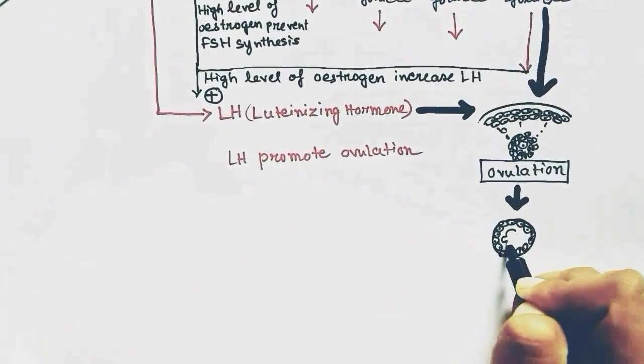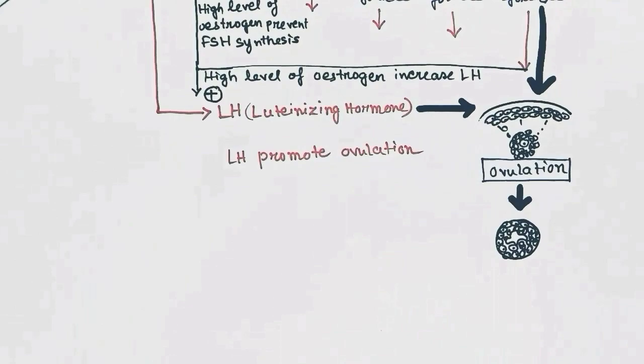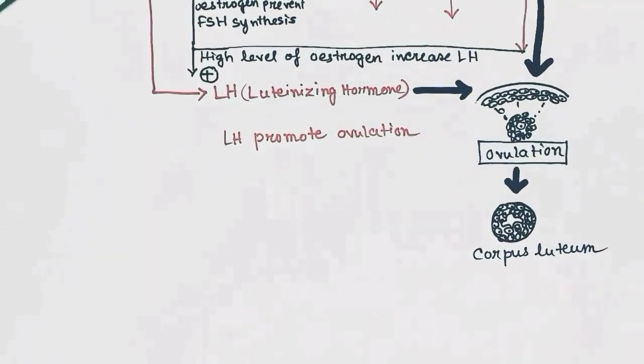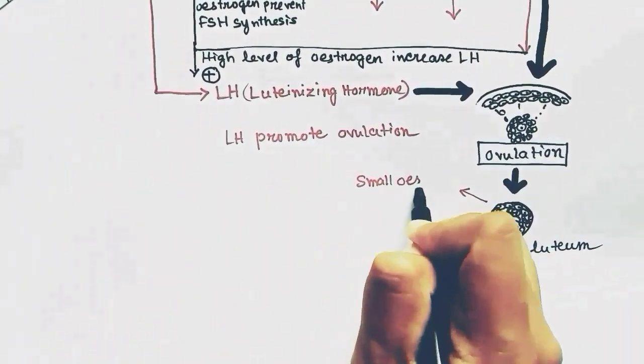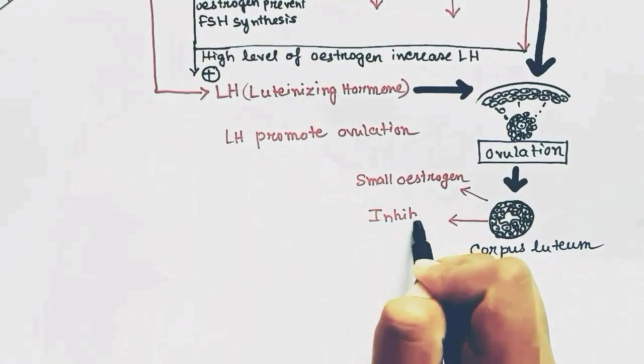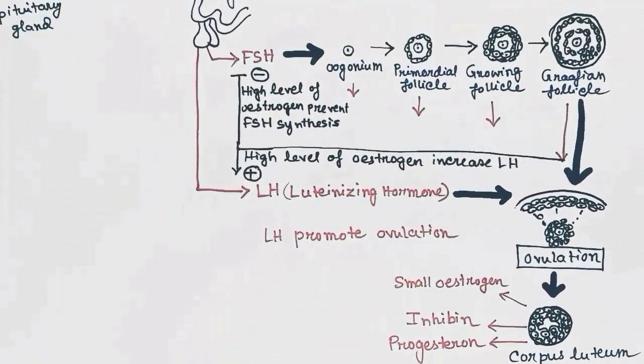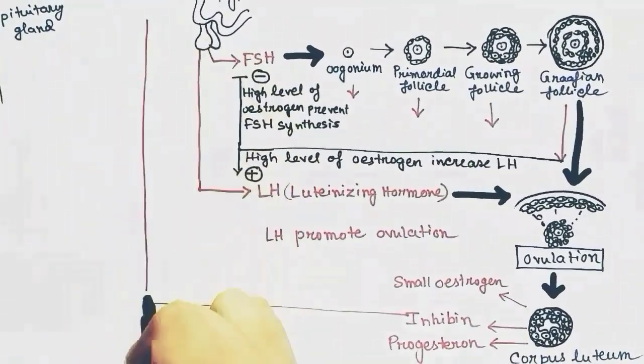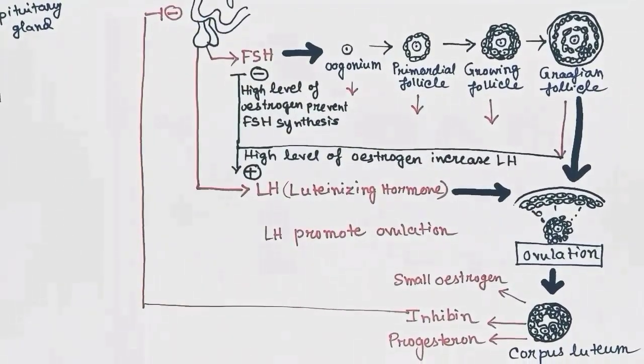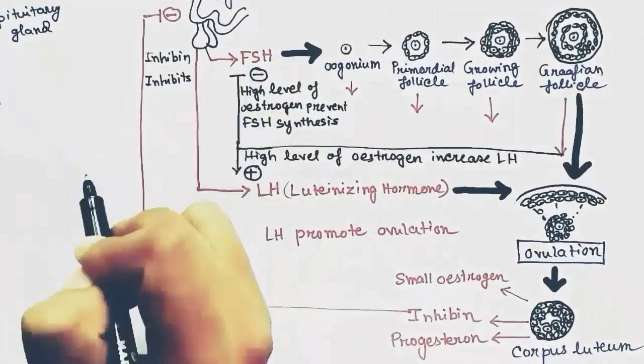The corpus luteum releases three hormones, small amount of estrogen, inhibin, and progesterone. Inhibin has its negative feedback on FSH release. Inhibin inhibits FSH release from pituitary gland, that is anterior pituitary.